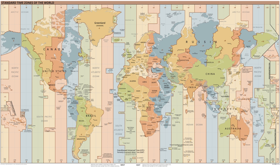Sir Sanford Fleming promoted worldwide standard time zones, a prime meridian, and the use of the 24-hour clock as key elements in communicating the accurate time. He referred to the resulting system as cosmic time. At the 1884 International Meridian Conference held in Washington D.C., the local mean solar time at the Royal Observatory, Greenwich in England was chosen to define the universal day, counted from zero hours at mean midnight. This agreed with Civil Greenwich Mean Time, used on the island of Great Britain since 1847.